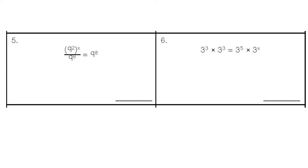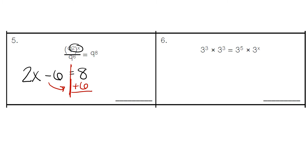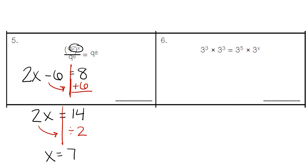In number 5, we start off by raising to a power, so we're going to do 2 times our unknown exponent. Then we would subtract the 6 because we have a division sign — when we're dividing, we subtract the exponents. Our answer is an 8. We can solve this like a two-step equation and work backwards: instead of minus 6, we do plus 6. 8 plus 6 gives us 14. Then instead of multiplying by 2, we divide by 2, isolating the variable and finding that the missing exponent is 7.